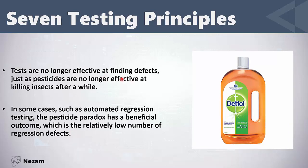However, the pesticide paradox is sometimes useful in automated regression testing. Regression testing is when you change a part of the software and that change causes bugs in other parts. We prefer to do regression testing in an automated way, reusing test cases written historically. In this case, we hope those tests do not find new defects — if they don't, that's good. But if they do find new defects, that means the system has regressed and we need to fix those problems. This applies only to automated regression testing, not normal testing.